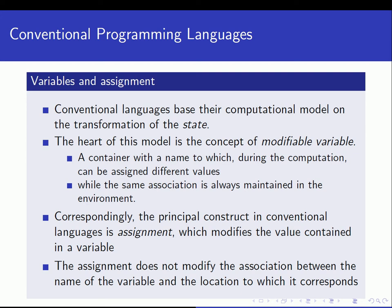The heart of this model is really the concept of the modifiable variable. When you're programming in C++, you're giving variables new values — that's really what you're doing all the time, changing the state of the program. The modifiable variable is a container with a name to which, during the computation, can be assigned different values, though the same association between the name and memory location is always maintained.